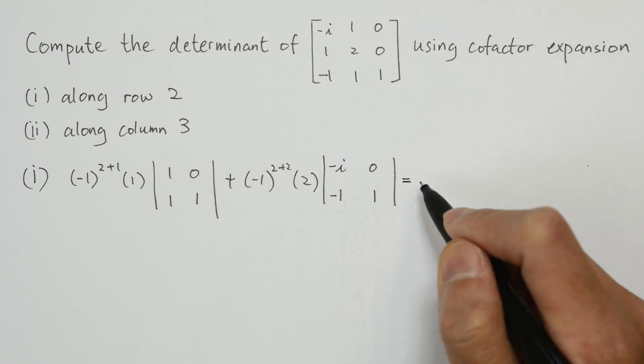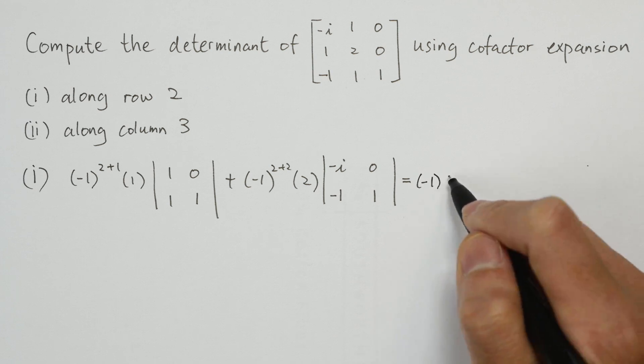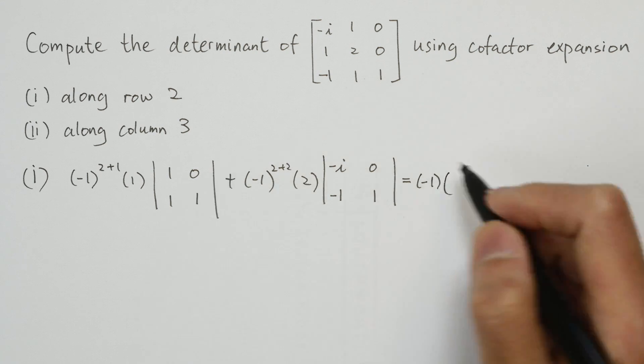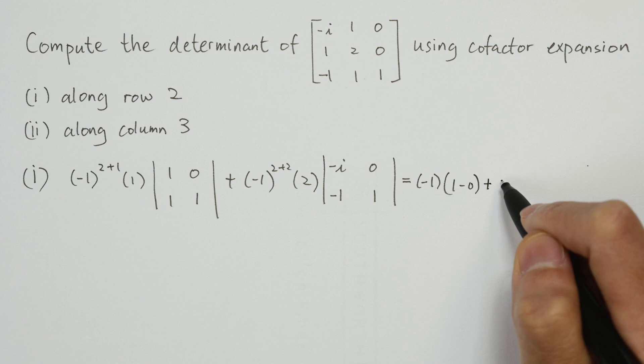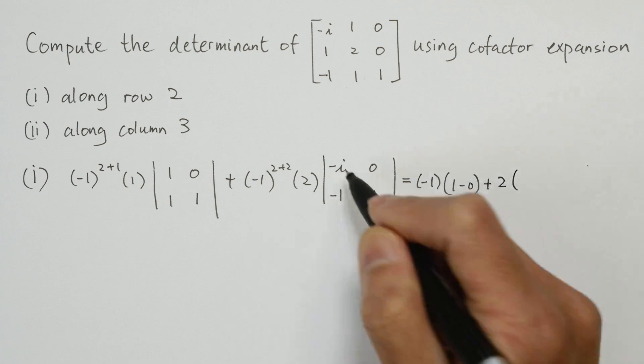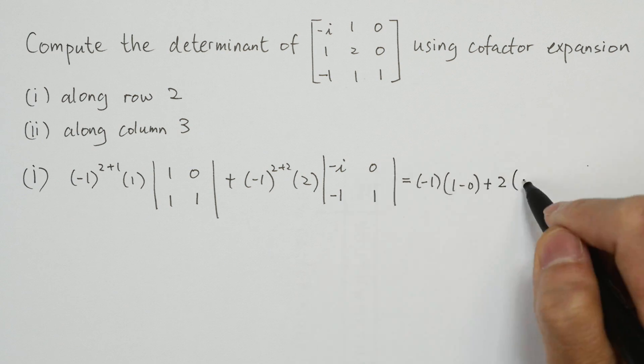Now we're going to expand these 2 by 2 determinants. The first term will give us minus 1 times, the determinant is 1 minus 0, plus 2 times, the determinant is minus i minus 0.